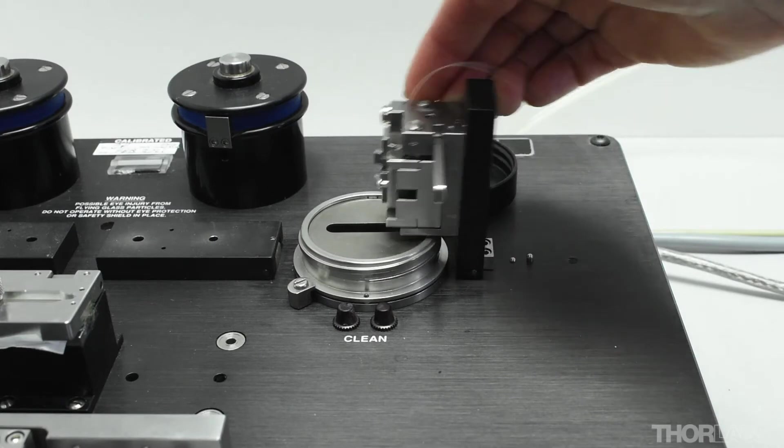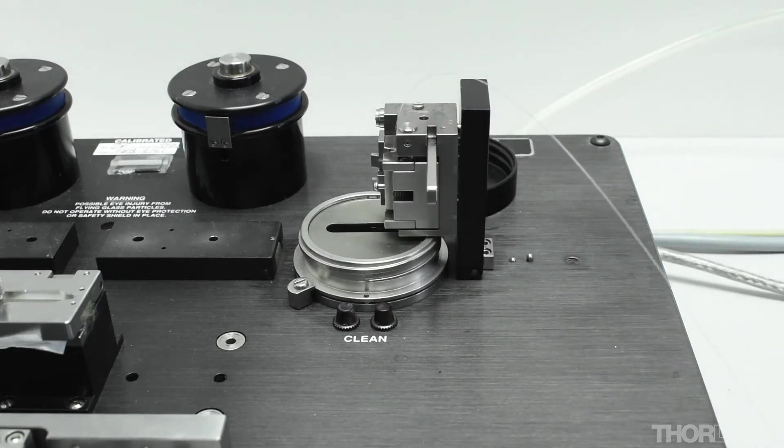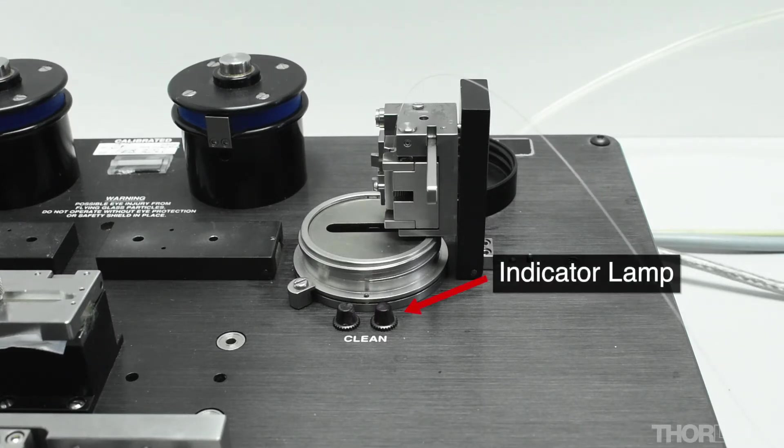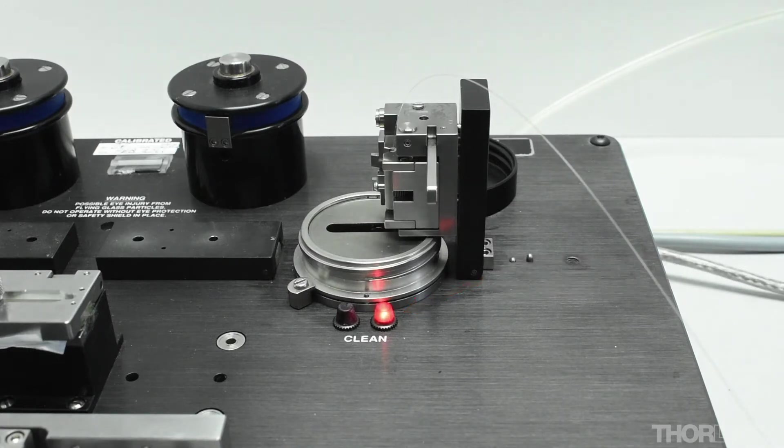Tip the dunking jig so it is vertical. This will activate the ultrasonic bath and also cause the end of the fibre to be immersed in the solvent. Any coating remaining on the stripped fibre should be removed by the ultrasonic cleaning action. An indicator lamp lights up when the required time for cleaning has been reached.